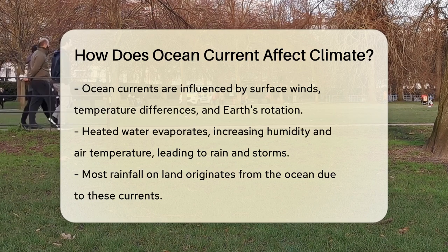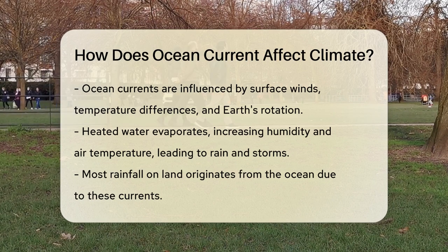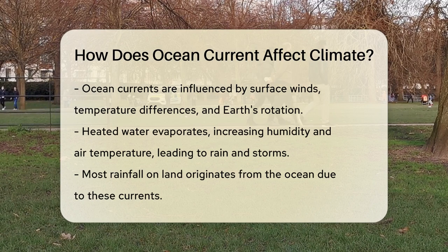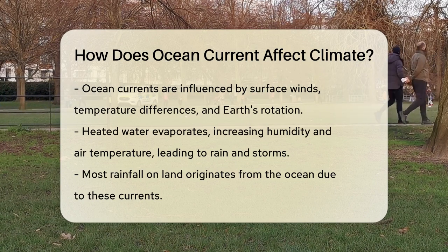This leads to the formation of rain and storms that are carried by trade winds. In fact, almost all the rain that falls on land originates from the ocean.